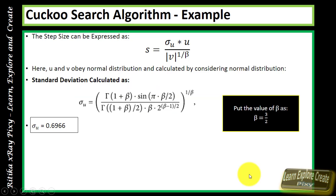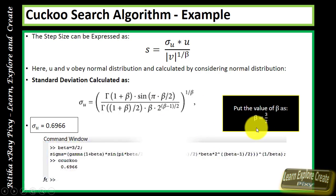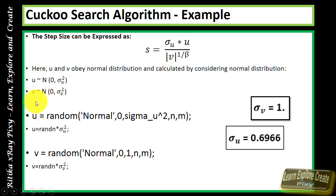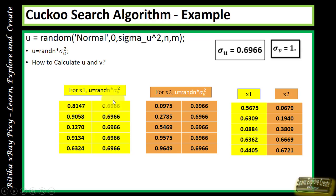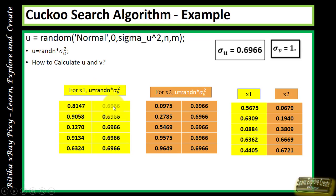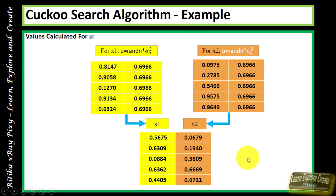To calculate the step size, we first compute sigma_u. Using beta = 3/2 = 1.5, putting the value in the formula gives sigma_u = 0.6966. Then we calculate values for u and v: u is a uniformly distributed random number multiplied by sigma_u. We calculate u for both x1 and x2 for each cuckoo, then substitute into the formula to get the results.